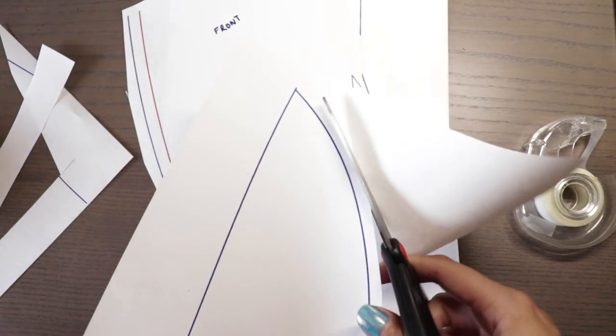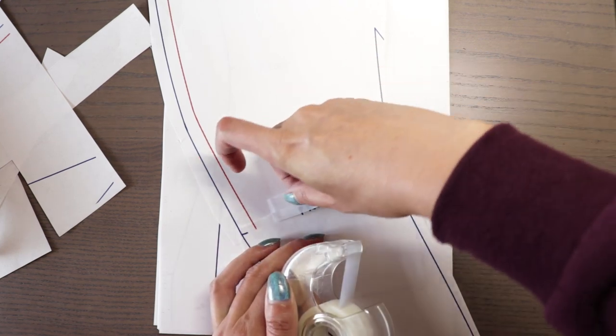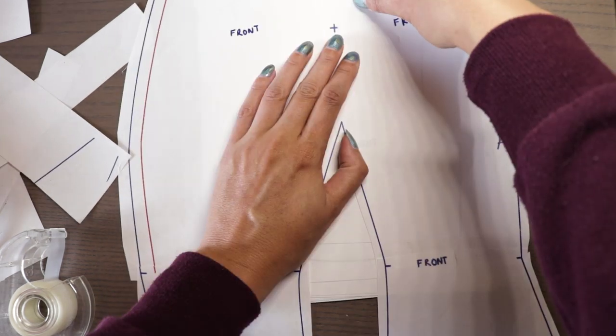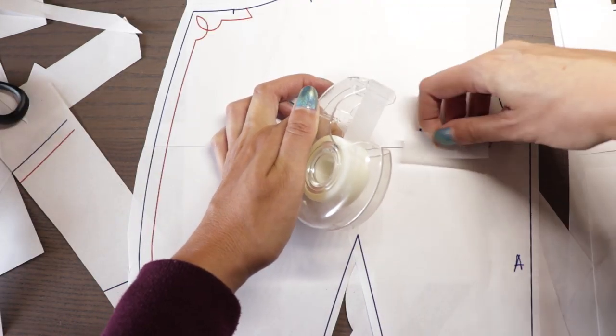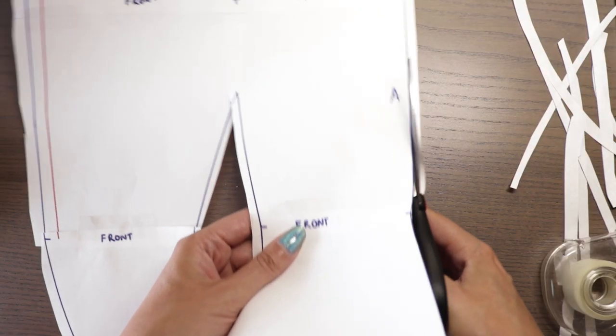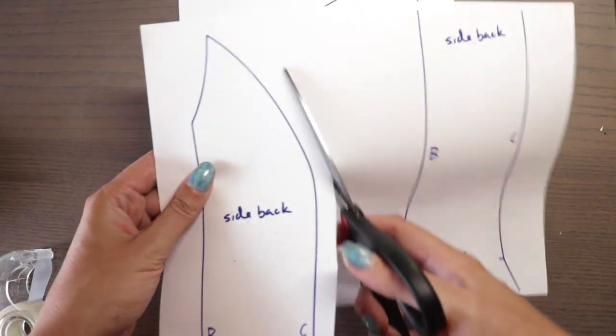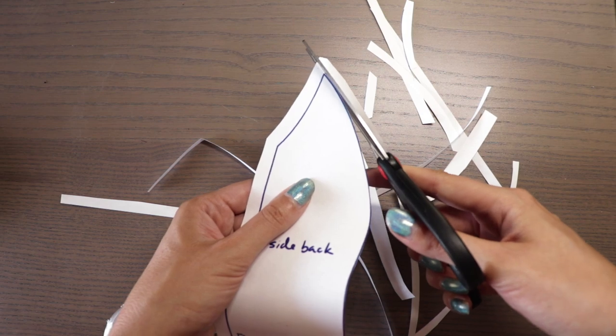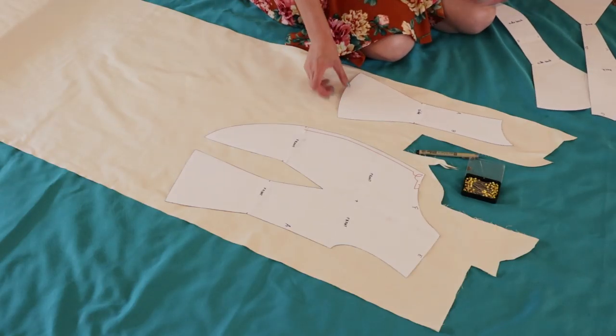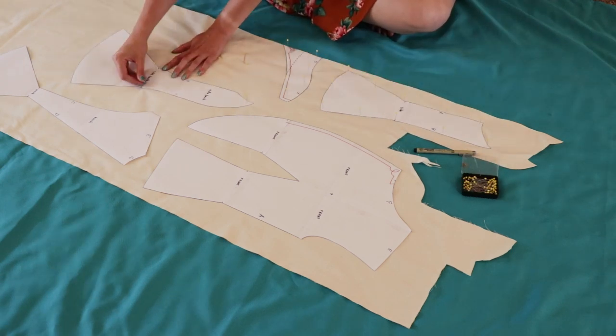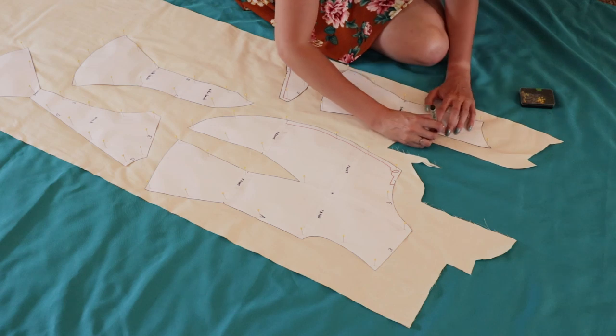Now since my pattern was definitely way too big to print off on one sheet of paper, I went ahead and broke it up into little parts and made some little marks for myself so I can figure out how it fits together. And I labeled each side so I know which ones go together. There's a bunch of cutting and taping.